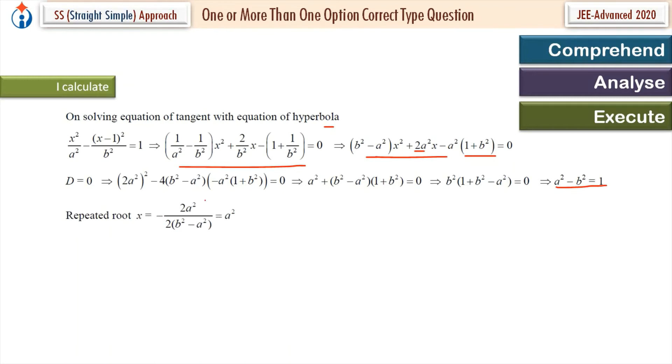And repeated root, minus b upon 2a, minus b upon 2a, which is a². So x coordinate of point P is a². Now we can get the y coordinate. Y coordinate is b². So point P is (a², b²). Coordinate of point P we have got in terms of a and b.